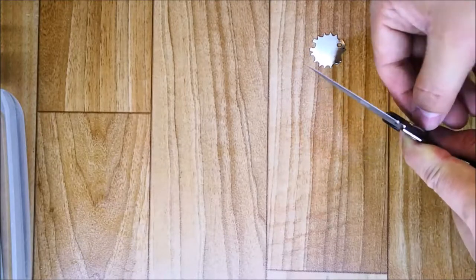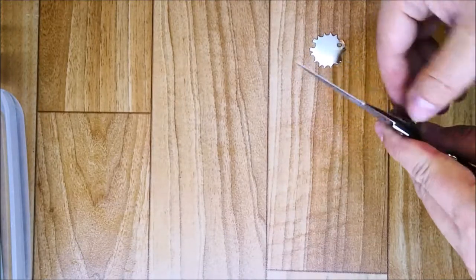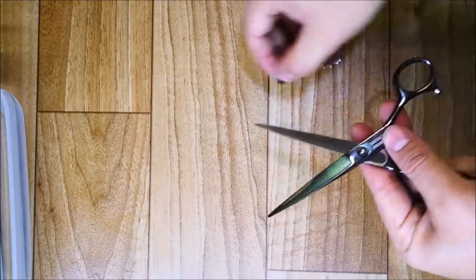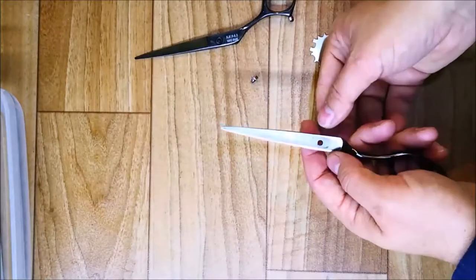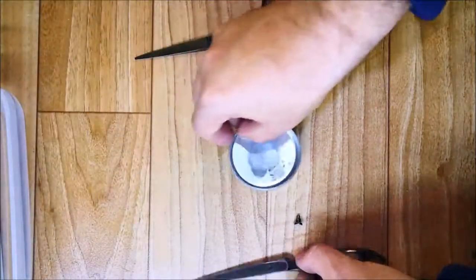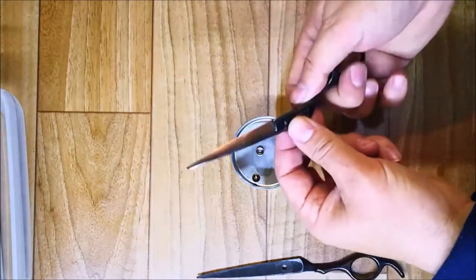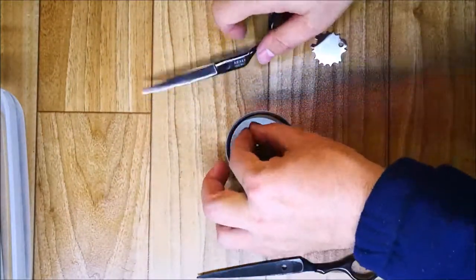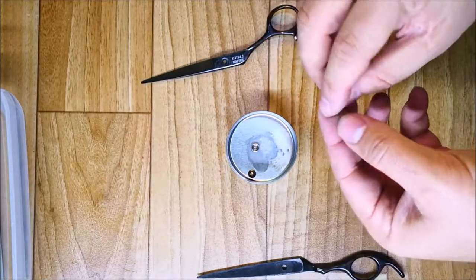We're going to attempt to remove that one. First we're going to unscrew the screw that the shears have. I recommend you to have a small little box or something to put them in so you don't lose them. This was overly tight.